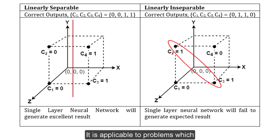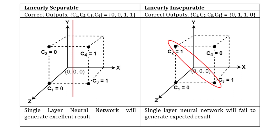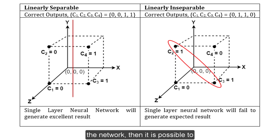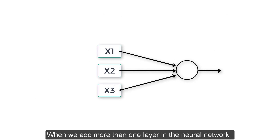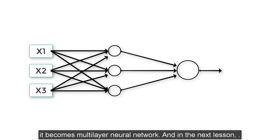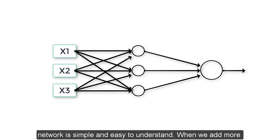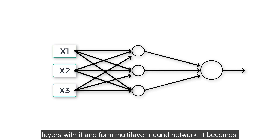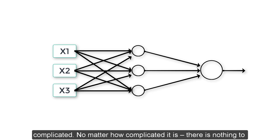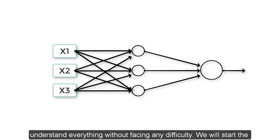This is the limitation of a single-layer neural network - it is applicable only to problems whose datasets are linearly separable. However, if we add more layers to the network then it is possible to apply neural networks in any situation. When we add more than one layer it becomes a multi-layer neural network, and in the next lesson we are going to learn about that. Single-layer neural network is simple and easy to understand; multi-layer neural network becomes more complicated - but no matter how complicated, I'll explain the concept in such a way that you will understand everything without difficulty. We will start multi-layer neural network in the next lesson.